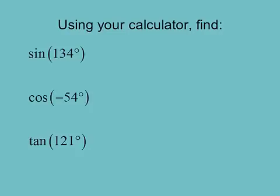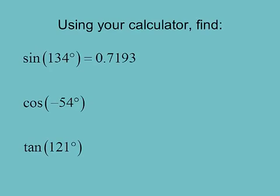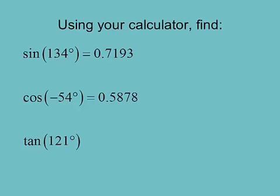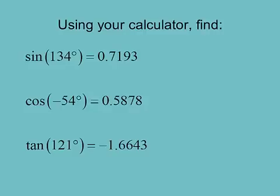Get your calculators out. We're going to use the calculator to find sine, cosine, and tangent of these angles. Make sure your calculator is in degree mode — the upper corner should show DEG. Put 134 in and hit sine: 0.7193. For negative 54, put in 54, hit the negative sign, then cosine: 0.5878. Notice — just because the angle is negative doesn't mean sine, cosine, or tangent will be negative.